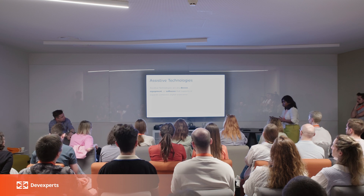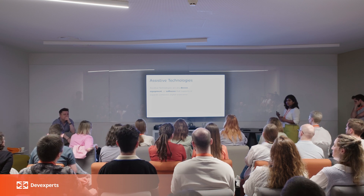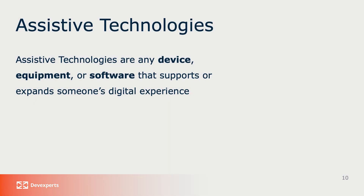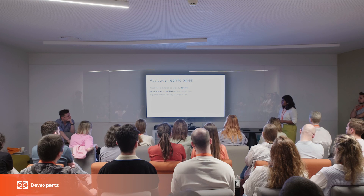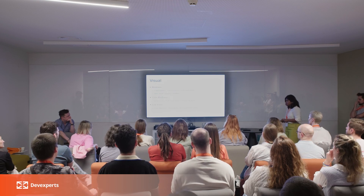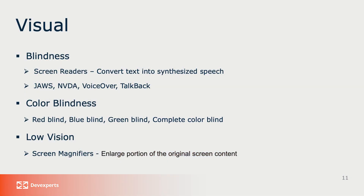Let's see how people interact with digital content. There are assistive technologies — any device, equipment, or software which supports and expands someone's digital experience, helping them complete day-to-day activities. For the visual category, the first type is blindness. If a person cannot see anything, they use screen readers, which convert text into synthesized speech. Widely used screen readers are JAWS and NVDA for Windows, and VoiceOver and TalkBack for mobile devices — those are inbuilt screen readers.